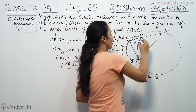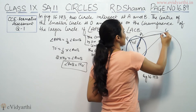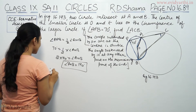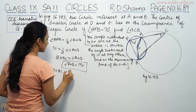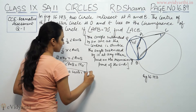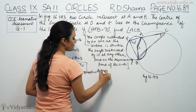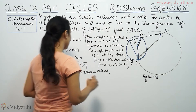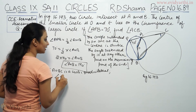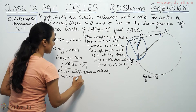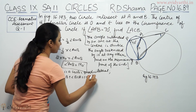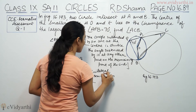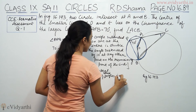Now, looking at angle AOB equal to 140 degrees, we can see that AOBC is a cyclic quadrilateral in the bigger circle. Since AOBC is a cyclic quadrilateral, opposite angles sum to 180 degrees. So angle O plus angle C equals 180 degrees, meaning angle AOB plus angle ACB equals 180 degrees.